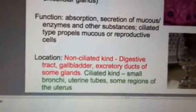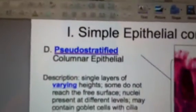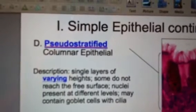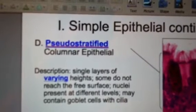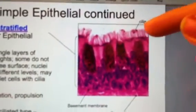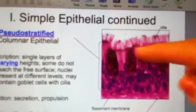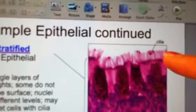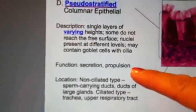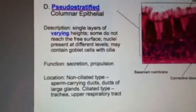Moving to slide 13, still on simple epithelial, we have pseudostratified epithelial. 'Pseudo' means appearing other than it really is — a false appearance. It looks like it has several layers, but it is actually one layer of varying height. This is a beautiful example of cilia on those cells. Pseudostratified epithelial is responsible for specific functions and is found in both ciliated and non-ciliated locations.